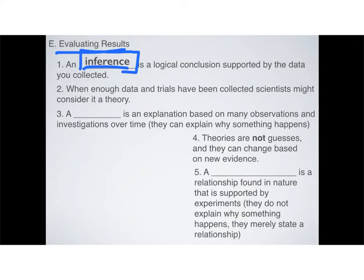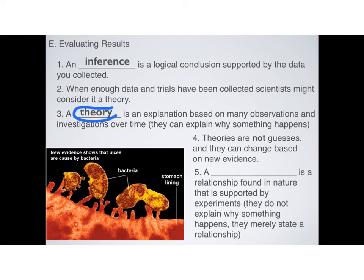When enough data and trials have been collected, then scientists might consider it a theory. An inference and a theory are not the same thing. An inference is something small, something that we maybe do a couple of times. A theory, though, that has to have a whole bunch of data and numerous trials before scientists might even consider it a theory. So what exactly is a theory? A theory is an explanation based on many observations and investigations over time. It is not the same as an inference. They can explain why something happens. An inference is just your conclusion after doing one lab, which might have three trials. A theory, on the other hand, can start to explain why something happens because now you've collected enough data that it's becoming statistically relevant.